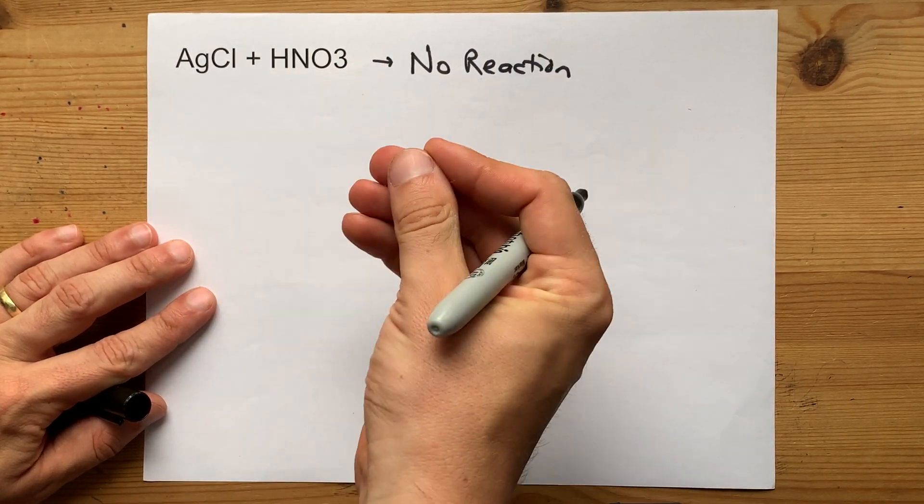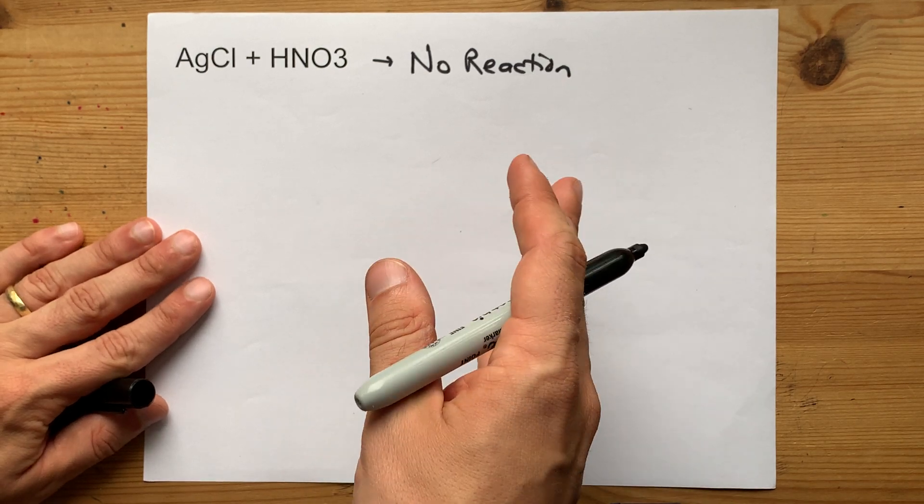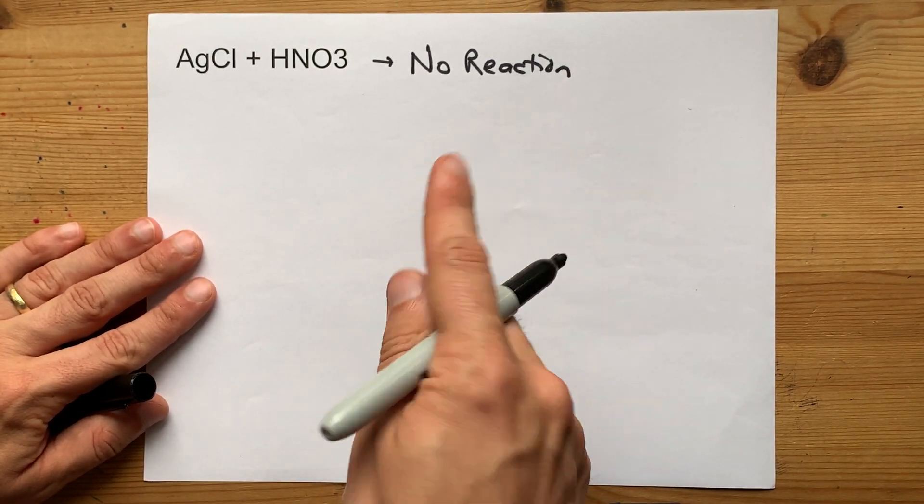Now, nitric acid will react with some chemicals, notably carbonates and bicarbonates, but that's because there's an extra reaction that takes place after the double displacement.